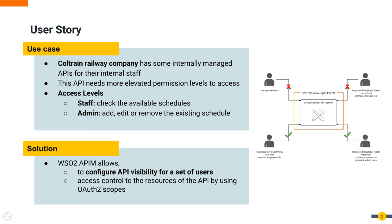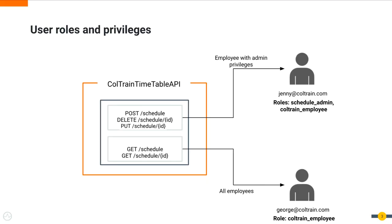As a solution, we could configure the API to be visible for a set of users. For example, this API should be visible only for developer portal users with the coltrane_employee role. WSO2 API Manager 4.0 provides the capability to control access to API resources using OAuth2 scopes — requests containing access tokens with the correct scope will be able to access these resources. This setup contains roles named schedule_admin and coltrane_employee, already created in the Coltrane tenant domain. The schedule_admin and coltrane_employee roles are assigned to jenny@coltrane.com, while only the coltrane_employee role is assigned to george@coltrane.com.